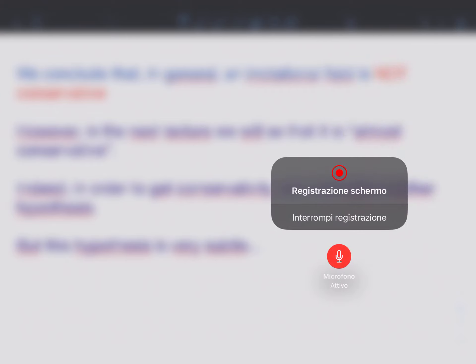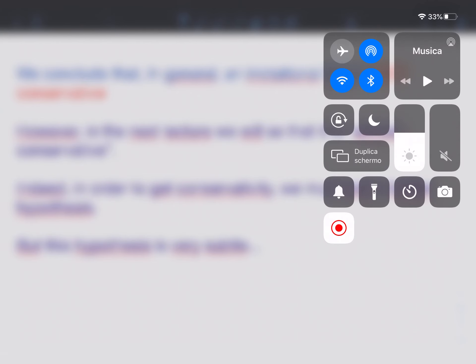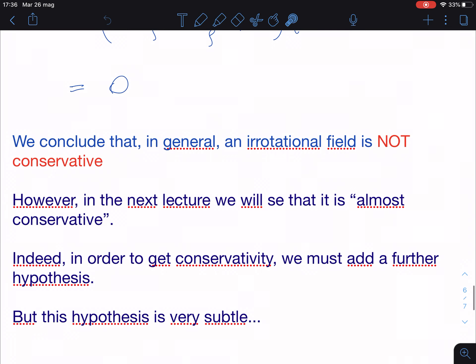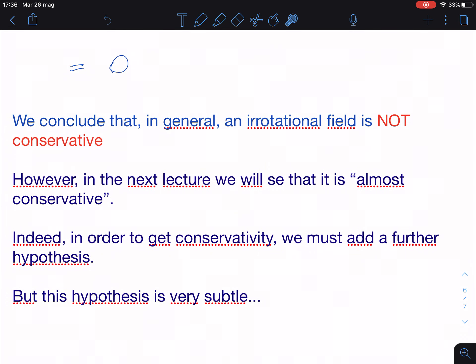Okay, hello to everybody. The microphone is active again, the recording too, so let us go to our work. We'll start on the last lecture. So we learned that an irrotational field, not always, an irrotational field is conservative. This is the meaning of this statement.